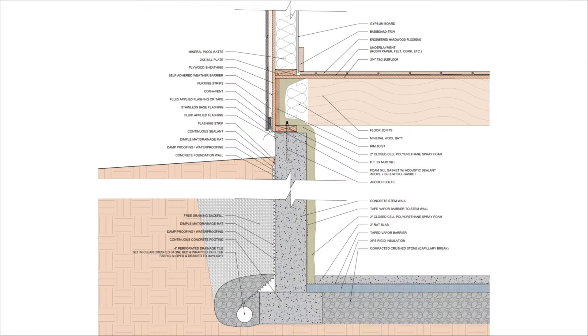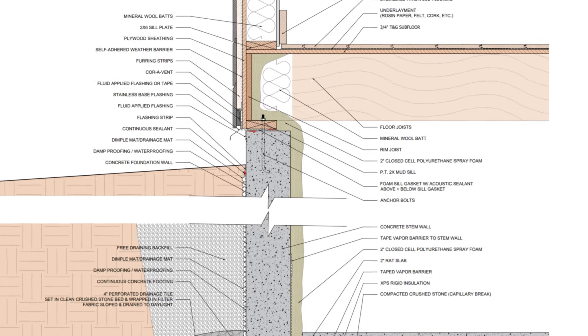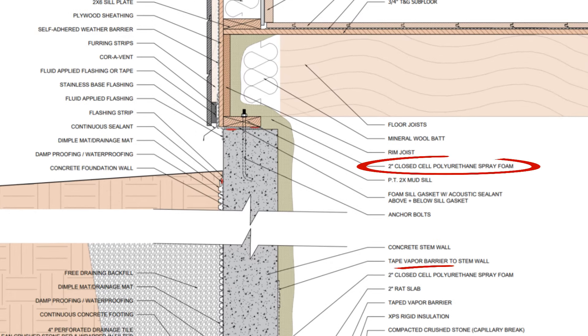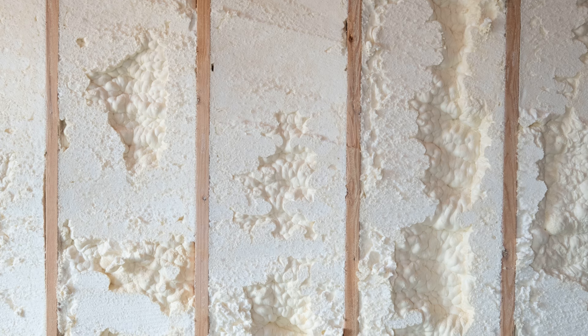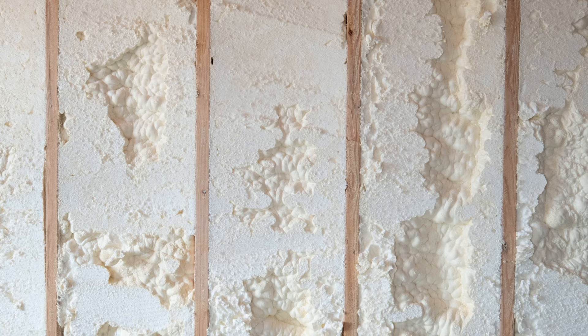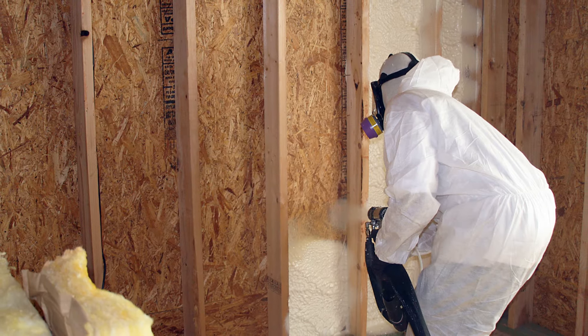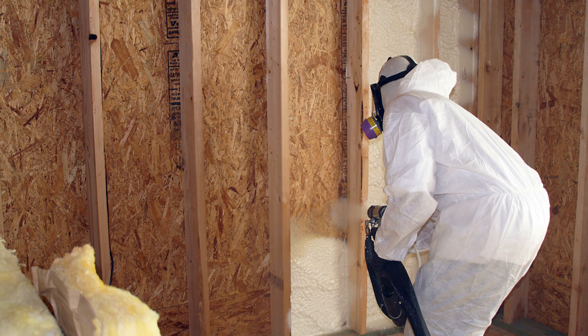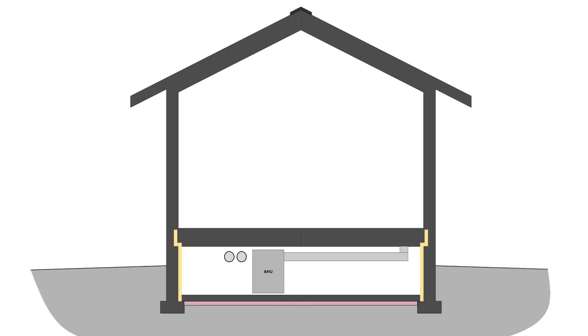Another common strategy is to apply a continuous layer of closed-cell spray foam on the interior side of the stem walls, up onto the rim joist, and on the underside of the subfloor to prevent air leakage and vapor diffusion that could result in condensation. This tends to be the most convenient option as it doesn't require taping each individual rigid insulation board and sealing around each penetration at the rim joist. However, spray foam can off-gas some nasty chemicals for an extended period of time, which can be a problem especially if ductwork is running through the conditioned crawl space.